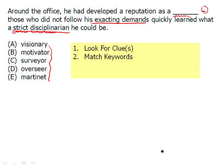So let's just use 'disciplinarian.' Let's start with A: visionary. Is a visionary a person who is a strict disciplinarian? The answer is no — they are a person who simply has a vision. So we can get rid of that. Next we have motivator. Well, a motivator is someone who really pushes you and motivates you, and therefore they have to be strict, otherwise you're not going to be motivated. So there's the answer — but wait a second.